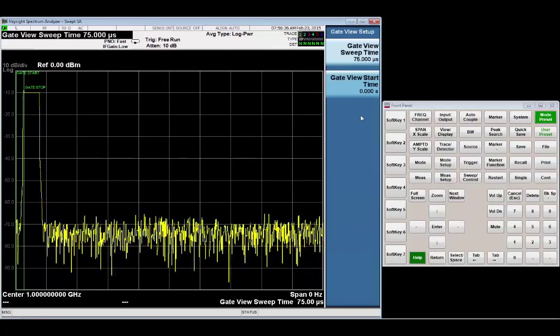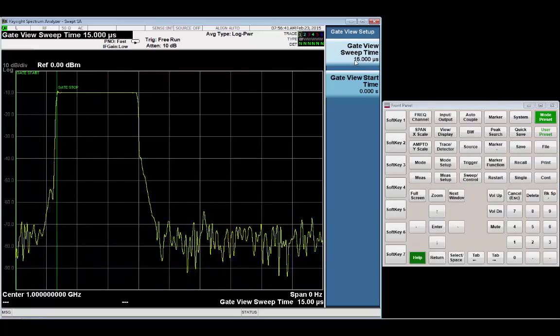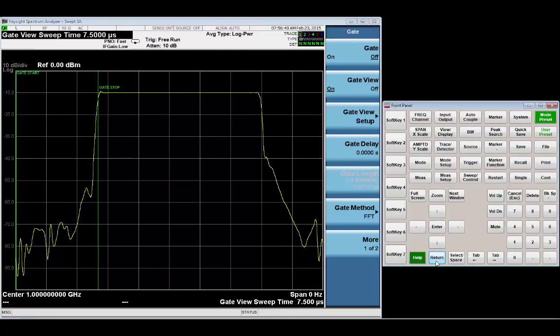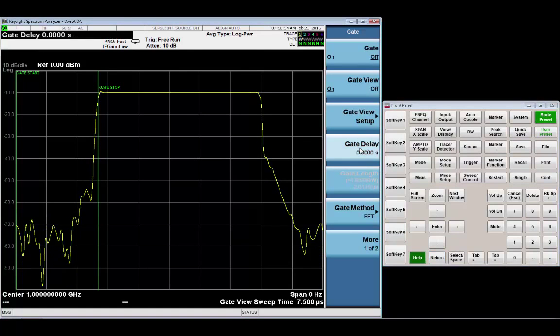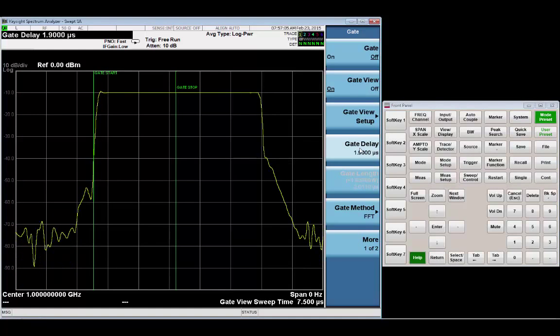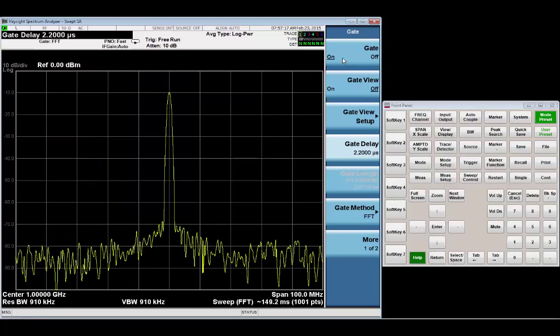And now I'm going to go to my gate view. I'm going to speed up my sweep time a little bit so that I have a better view of the pulse. And then I'm going to go back to gate delay and then use that to position my trigger. Now, remember, for gated FFT, we'll want to try to position the gate in the first half of the pulse. And now that I have that positioned, I can go ahead and turn on my gate. And there we have the signal.